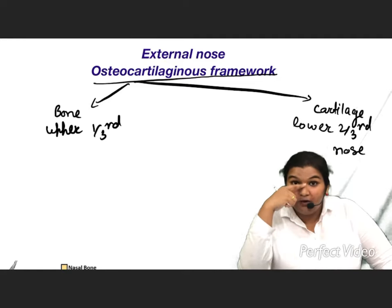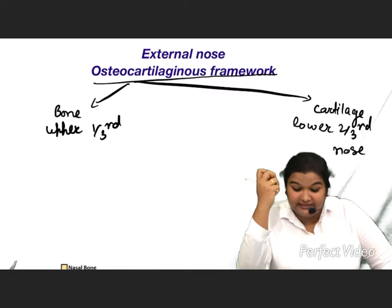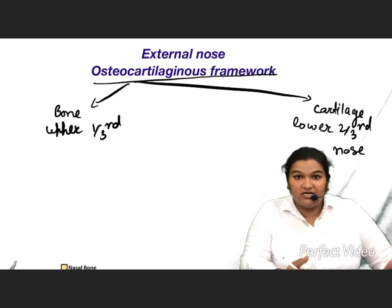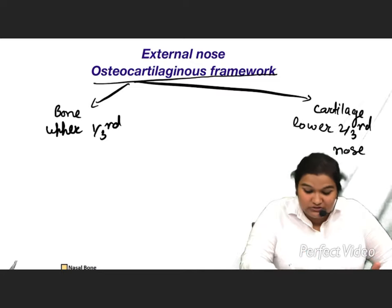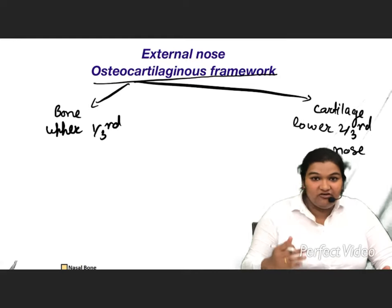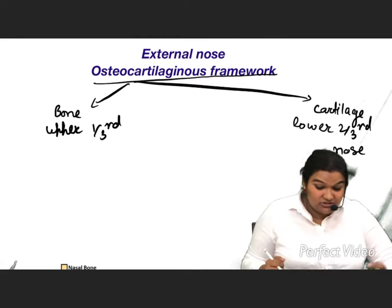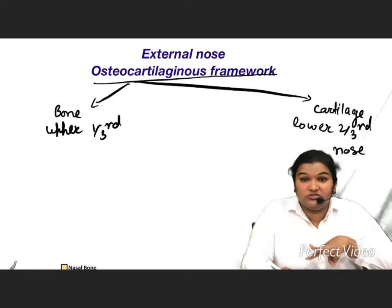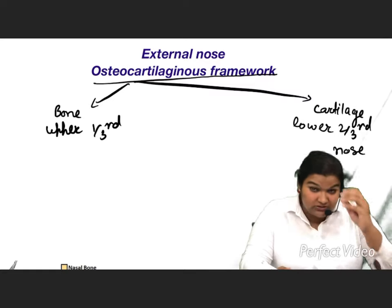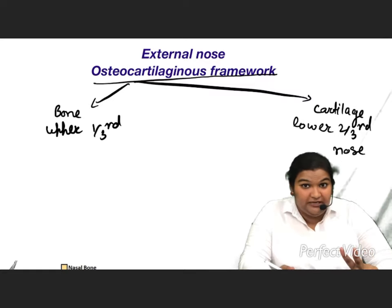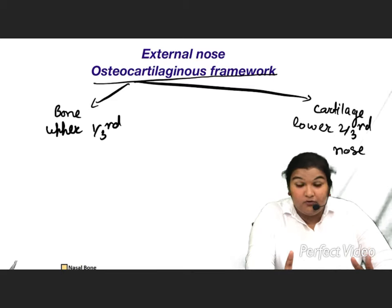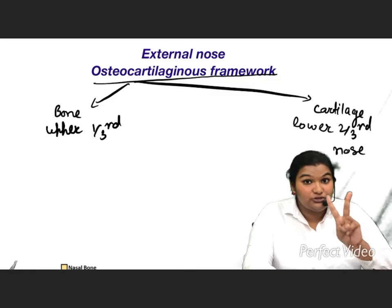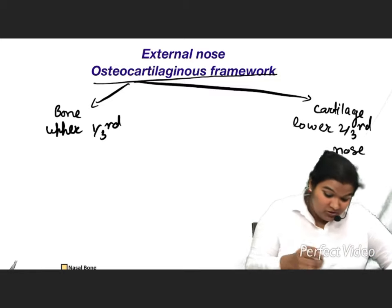The upper one-third is the bony part and the lower two-thirds is cartilage. Before moving towards the images to see which cartilage and which bone forms the nose, we will first enumerate them, see whether they are paired or unpaired, and then move towards the images. Moving towards the bone: three bones form the bony part of the nose, two of which are paired and one is unpaired.